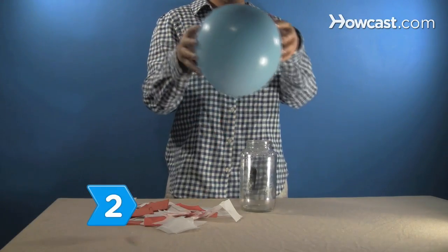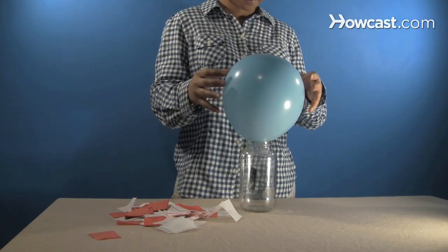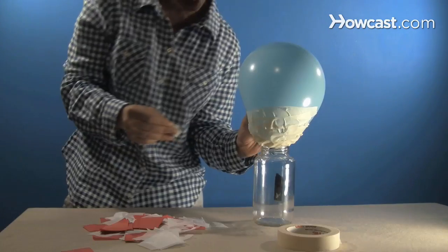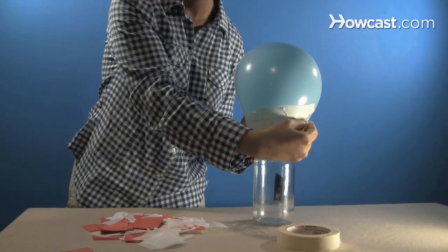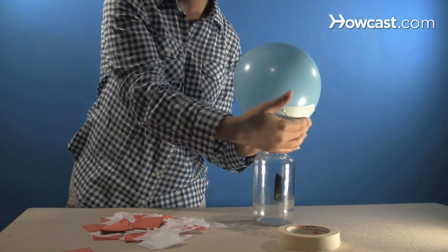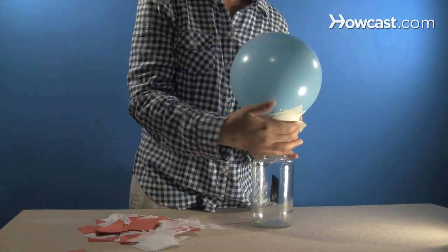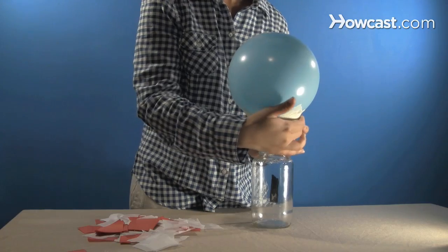Step 2. Set the balloon on the mouth of the jar to steady it as you work. Create a skull shape by wrapping a few strips of masking tape completely around the balloon about one-third of the way up from the bottom, slightly squeezing it in to create the look of the jaw.